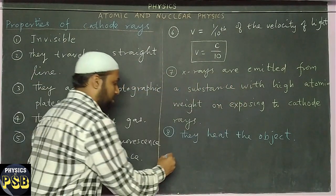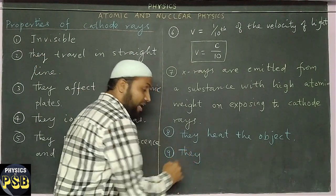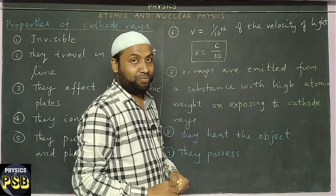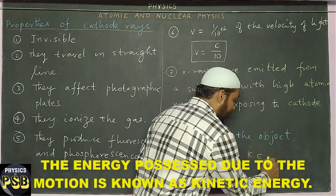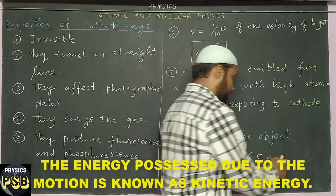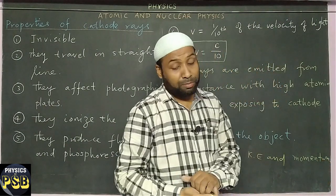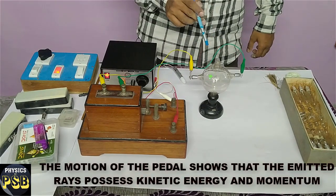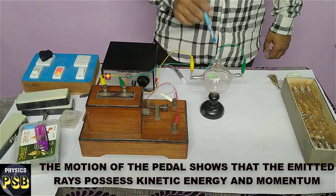The last property is that cathode rays possess kinetic energy and momentum. It is because of this that when current is passed through the discharge tube, the paddle starts rotating — this shows that the cathode rays possess kinetic energy and momentum.